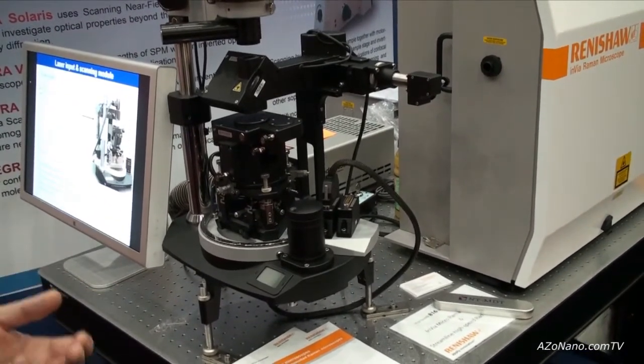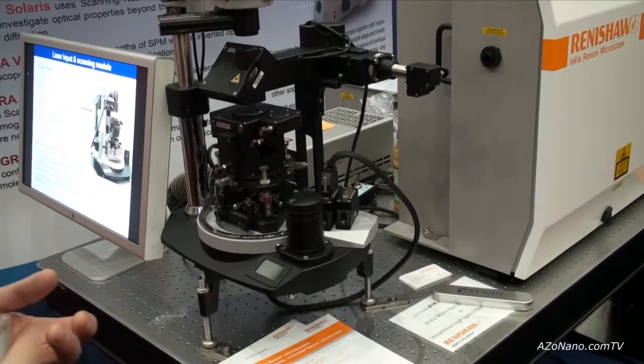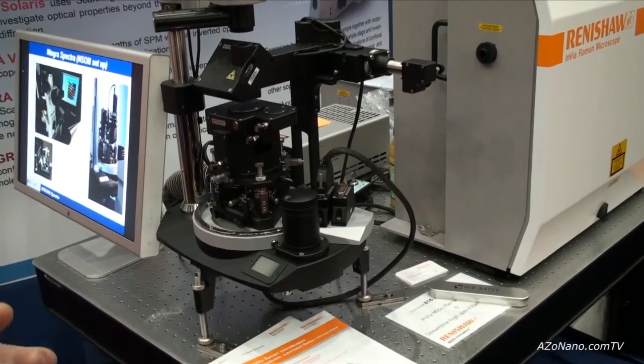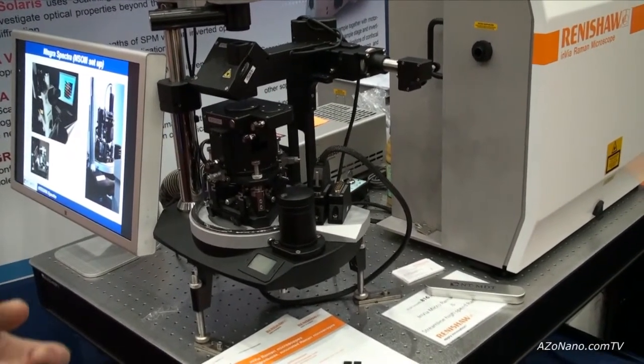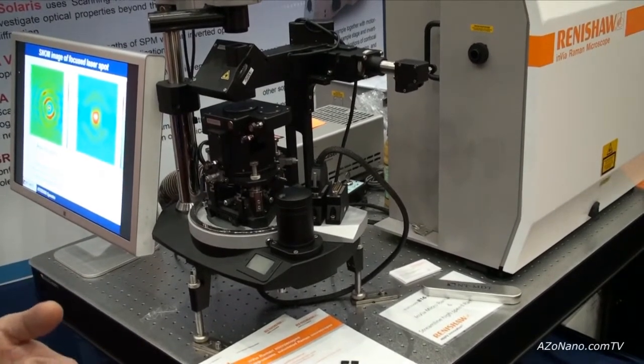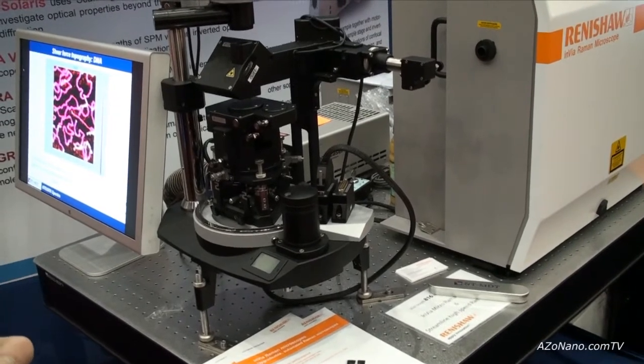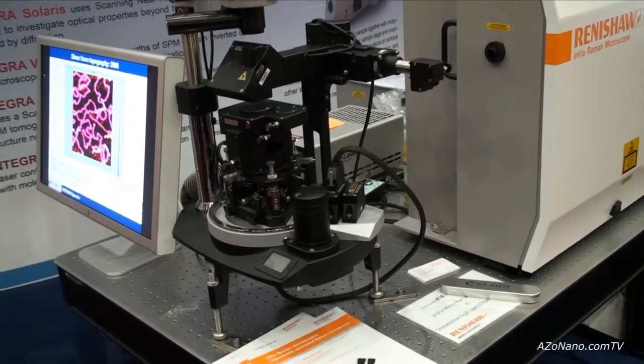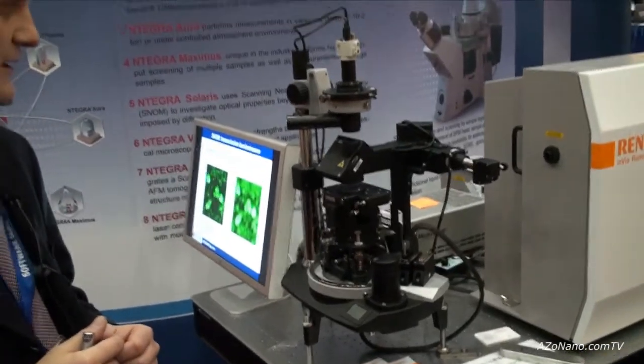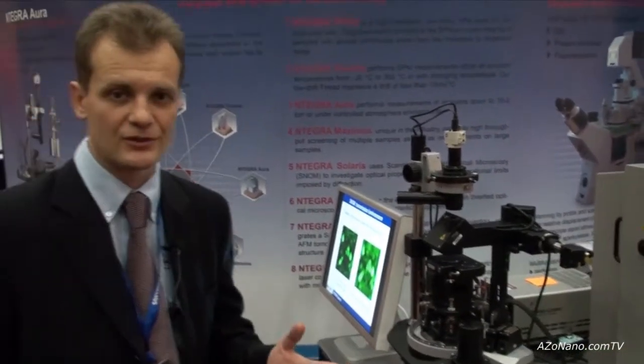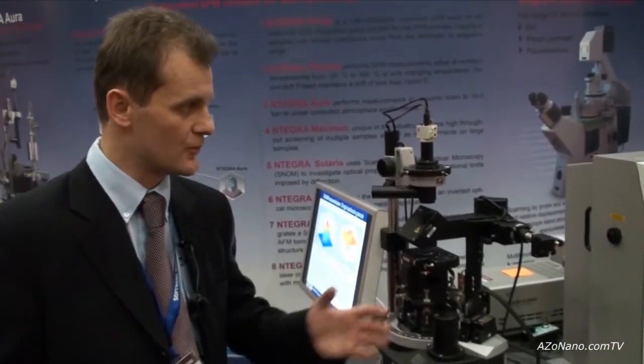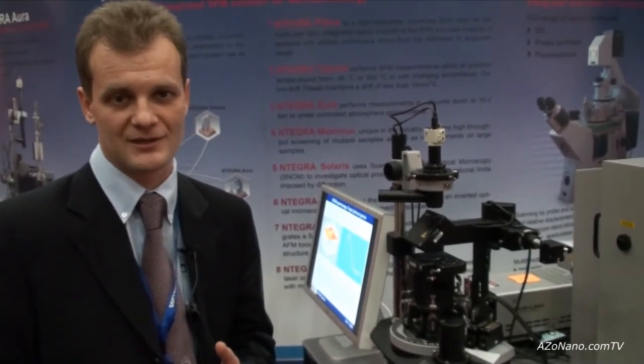One Raman system, another one Aura dedicated for magnetic measurements, another one Cerma for low drift measurements, Integra Vita for biological measurements, Integra Maximus for semiconductor applications. This total family allows to put Integra as a top level microscope on the market nowadays.